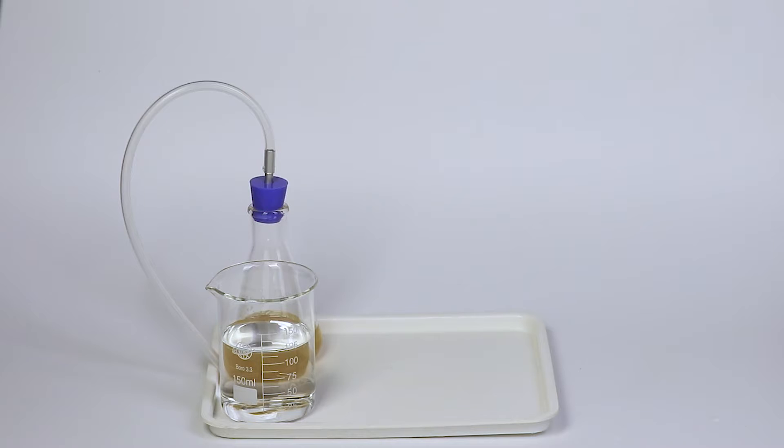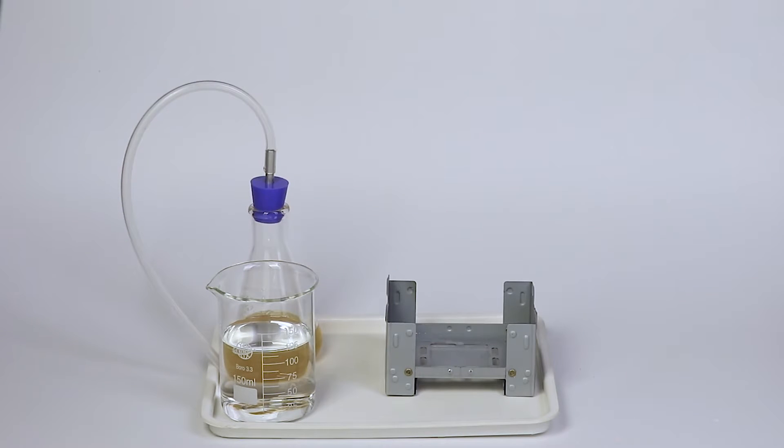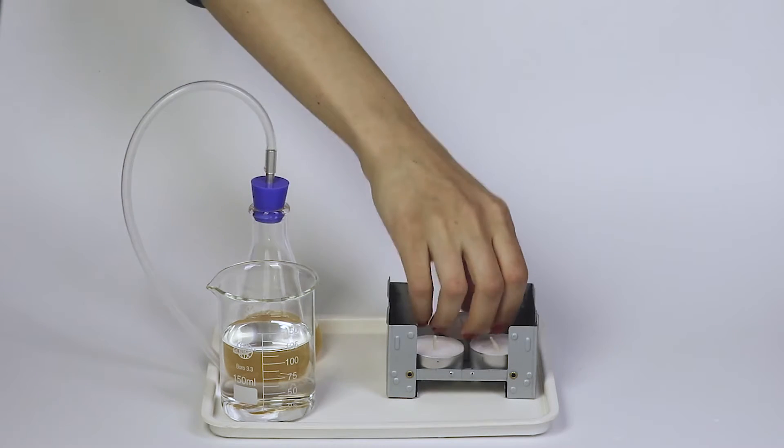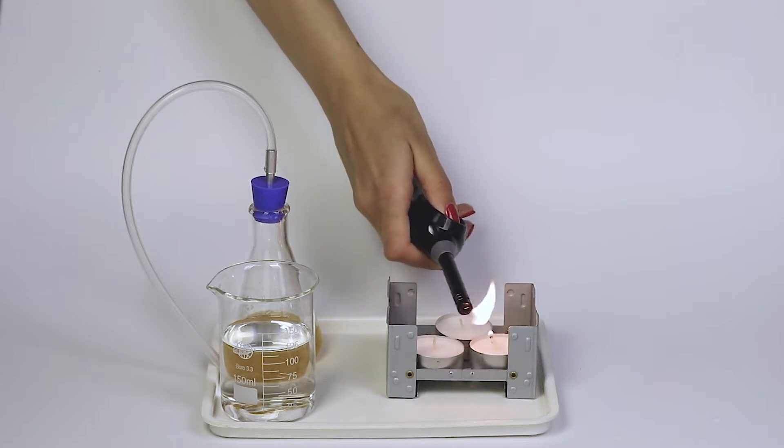Prepare the solid fuel stove. Put three candles into the stove, light them, and cover the stove with the flame diffuser.